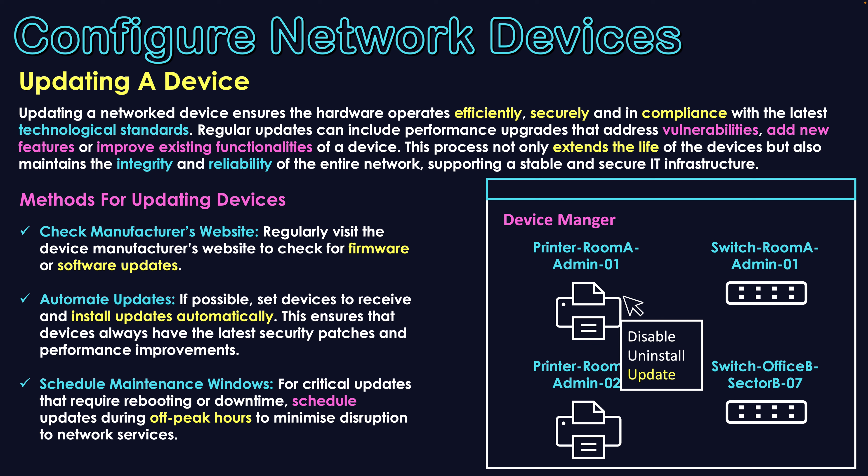In my image here, I've got a sample of Device Manager, which is available through Windows operating systems. Here you can right-click on types of devices — whether network devices or any type of input/output device on your system — then select update, and it will update the software affiliated with that device to ensure you've got the most up-to-date firmware and software straight from the manufacturer.